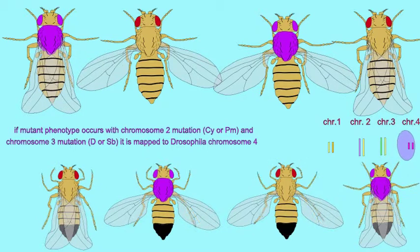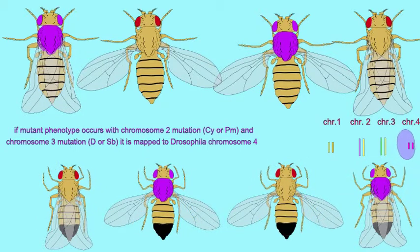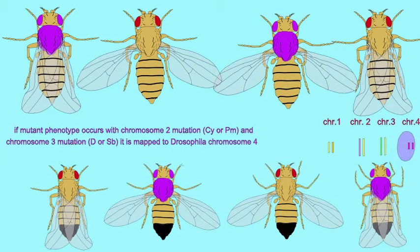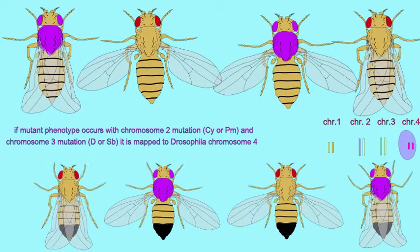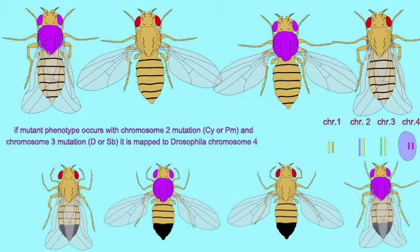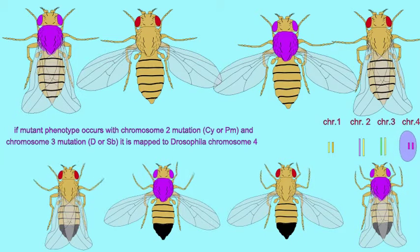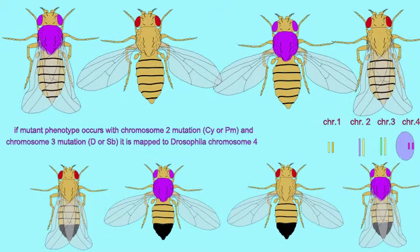Also, one of the reasons one might choose, say, plum stubble over curly diket is that if you were trying to map a mutation which affected the wings, one might not choose curly and diket, but rather the plum stubble mutations which don't affect the wings.